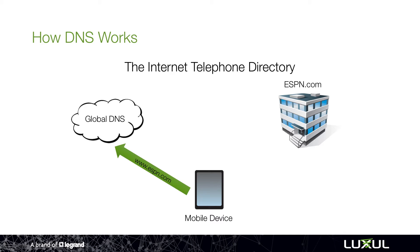So when an internet device goes and asks for ESPN.com, it's using the name of ESPN.com. Well it's really not going to ESPN.com the website — it's actually going to the global DNS, or the address book. And what happens is that address book translates from the name to the number and says, yes, I know what ESPN.com is, I know what that IP address is. And so it sends that IP address back down to your device.